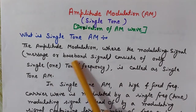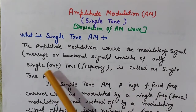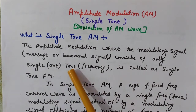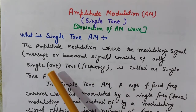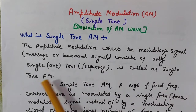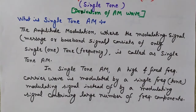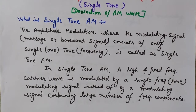Now it's time to understand single-tone AM. Amplitude modulation where the modulating signal — also known as the message or baseband signal — consists of only a single tone. Here 'single' means one and 'tone' means frequency, so single tone means only one frequency. This is called single-tone amplitude modulation.